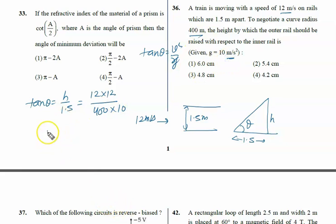So here, h equals 12 into 12 into 1.5 upon 400 into 10.